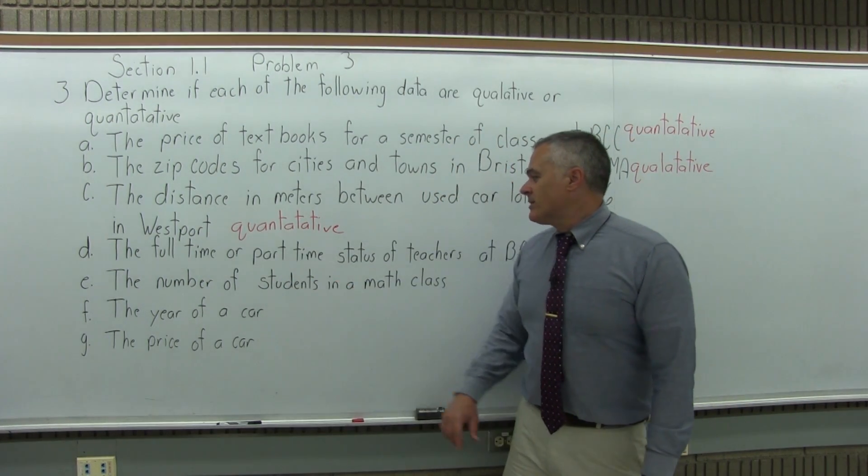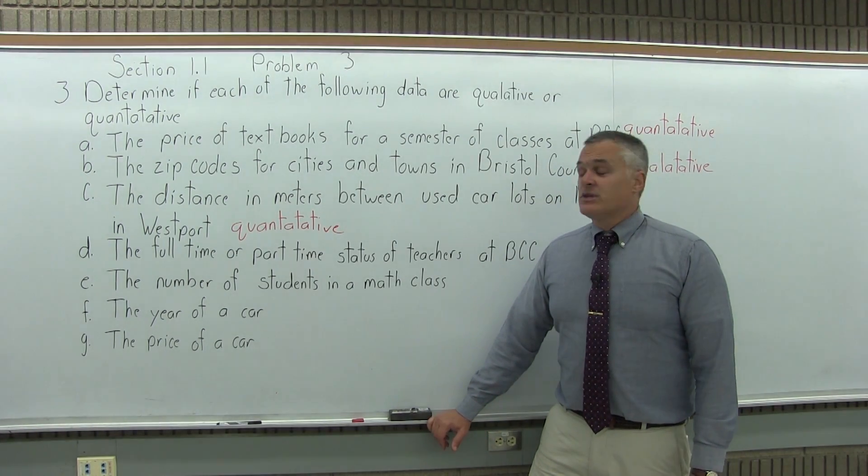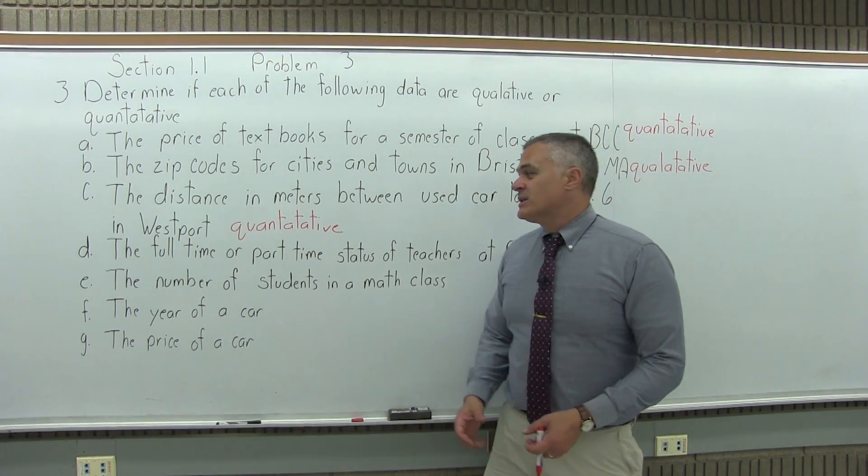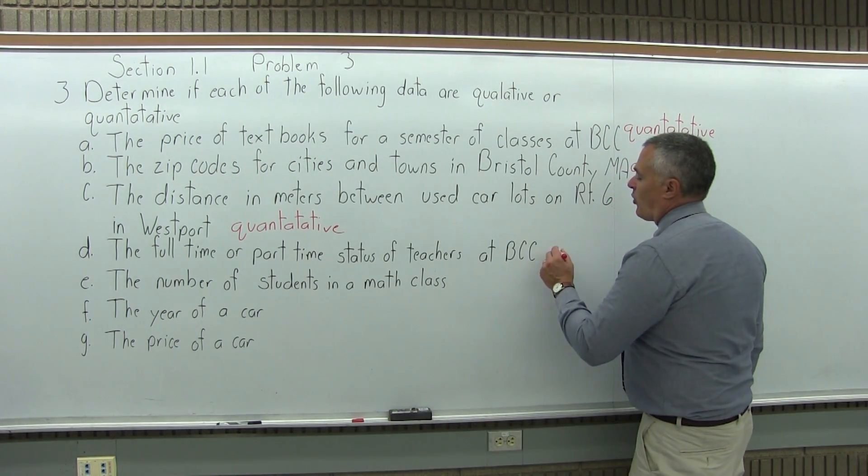D, the full-time or part-time status of teachers at BCC. So that is strictly a label, it doesn't measure a quantity. It's not saying how many teachers are full-time and how many are part-time. Just the status, so that is qualitative.